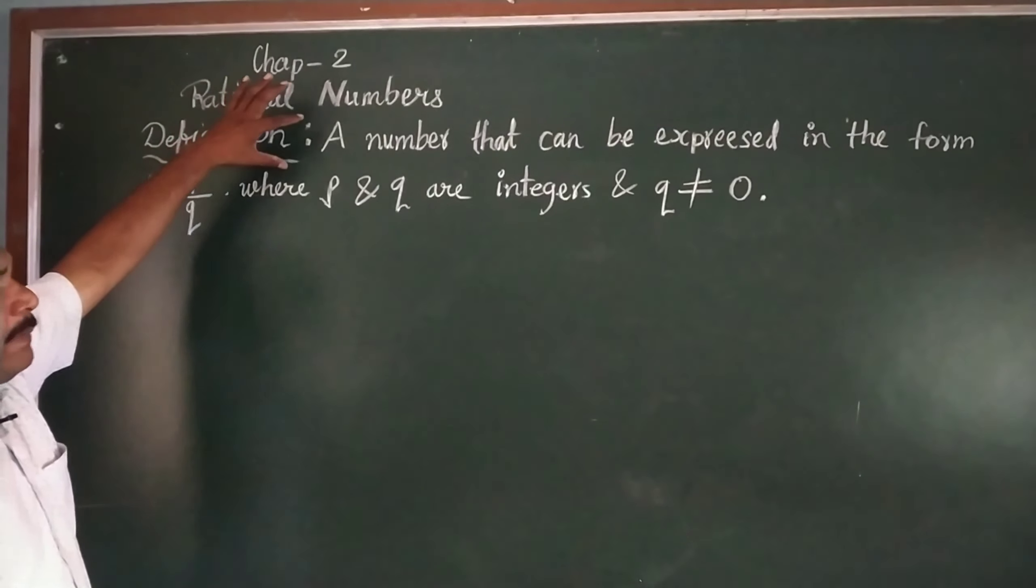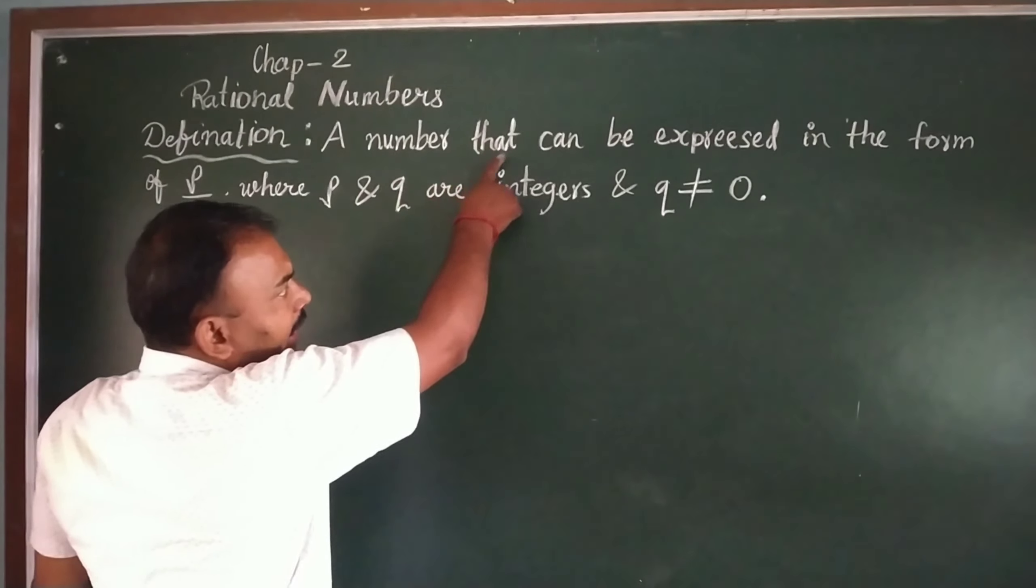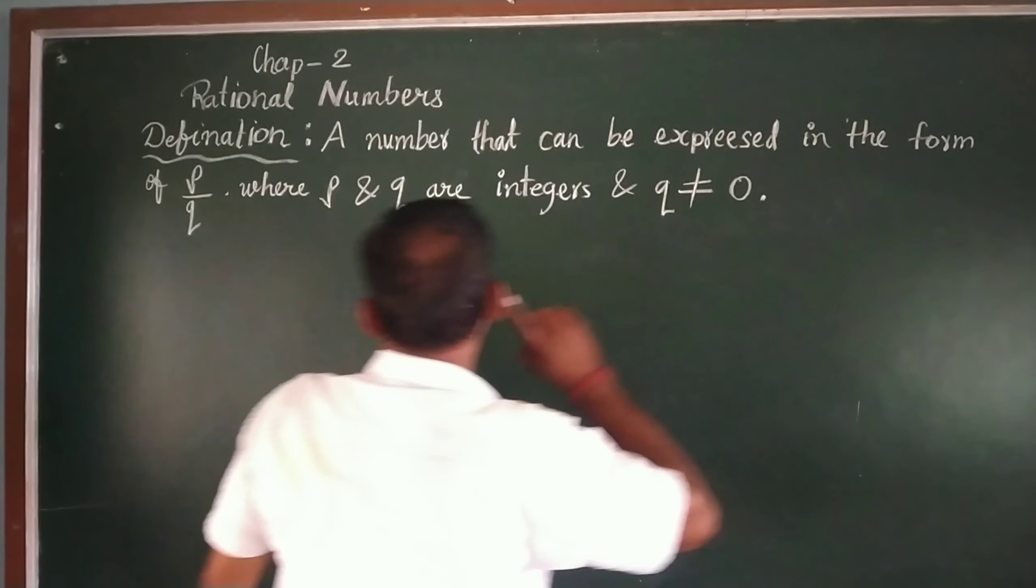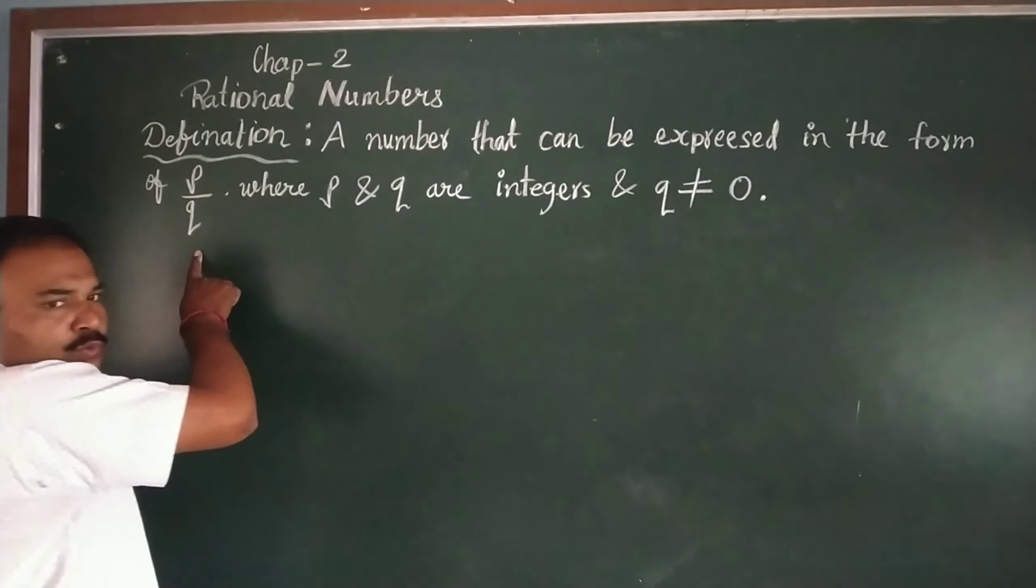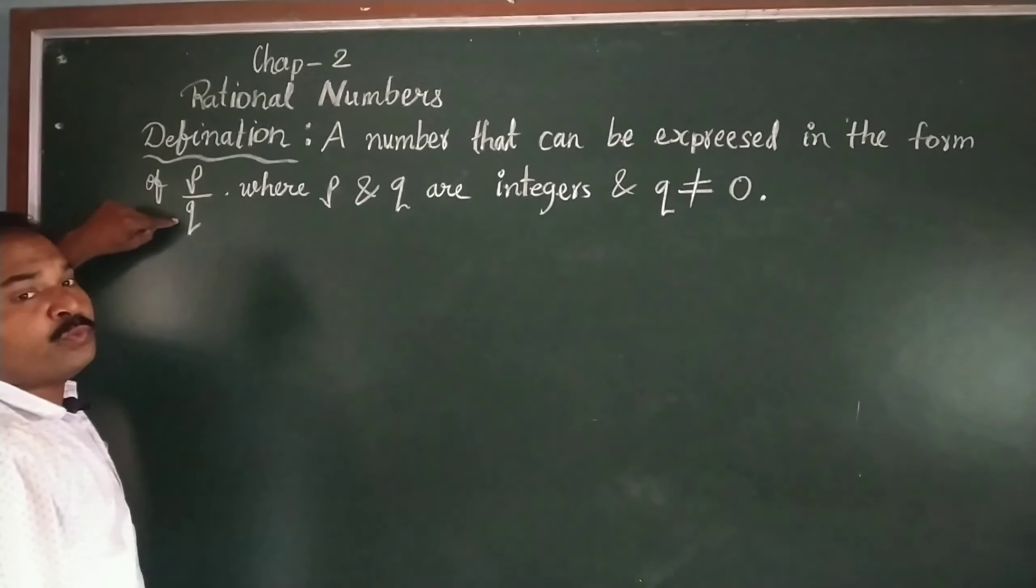Here the definition is written: a number that can be expressed in the form of P upon Q. It is such a number which can be expressed in the form of P upon Q.